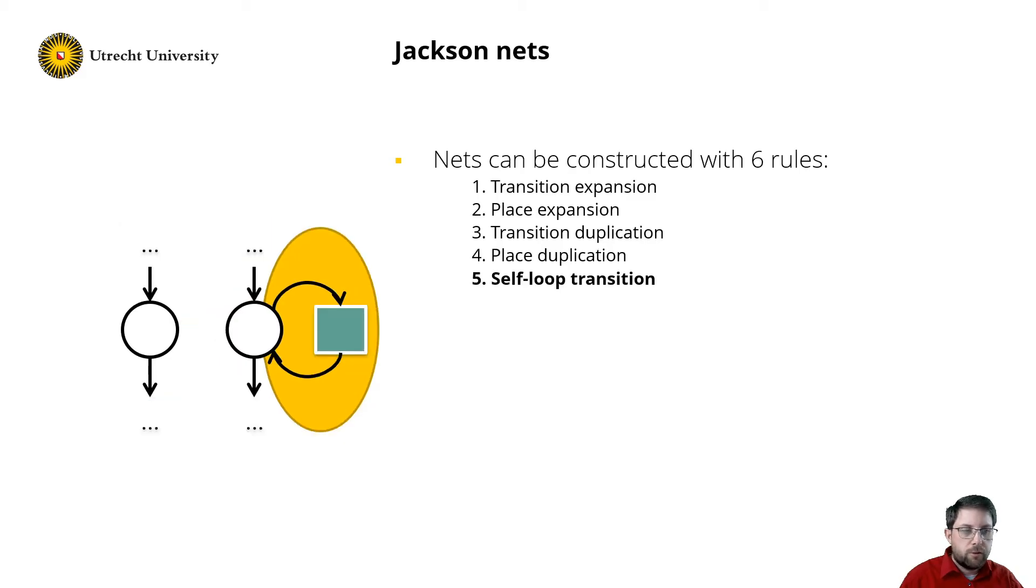The fifth rule introduces repetition to the net. So any place may be extended by a self-loop transition. This transition does not add any state to the reachability graph, just a self-loop transition. However, we can then further extend this transition using the other rules, thus introducing repetitive behavior.